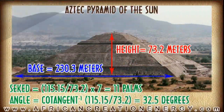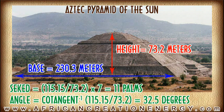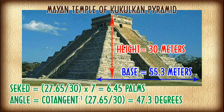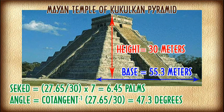Now let us look at some Mesoamerican pyramids. The Aztec Pyramid of the Sun, with a height of 73.2 meters and a base of 230.3 meters, has a Seqed of 11 palms, equivalent to roughly 32.5 degrees. The Mayan Temple of Kukulkan has a height of 30 meters and a base of 55.3 meters, giving a Seqed of 6.45 palms, equivalent to 47.3 degrees. The step pyramids tend to have the highest Seqeds, with higher Seqed values corresponding to lower angles — many step pyramids fall in the 30 to 45 degree range.